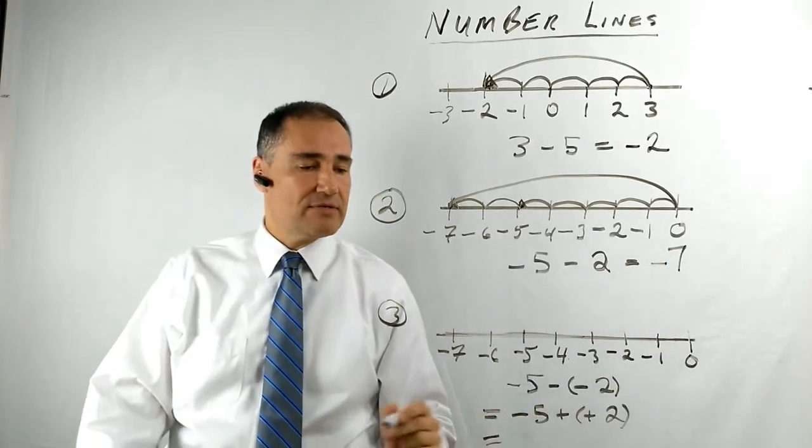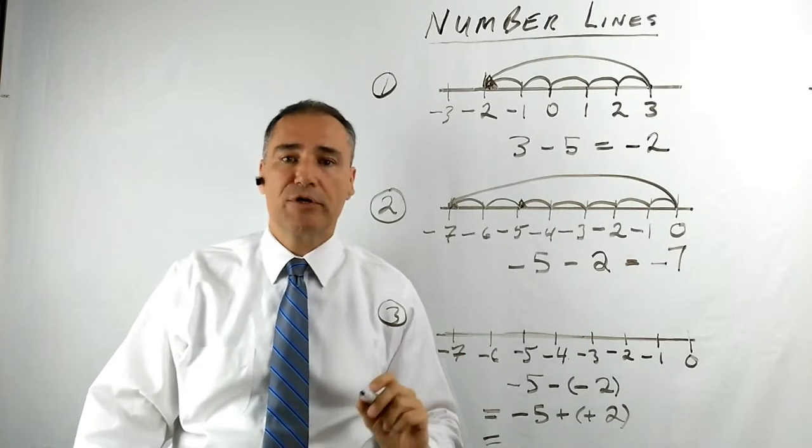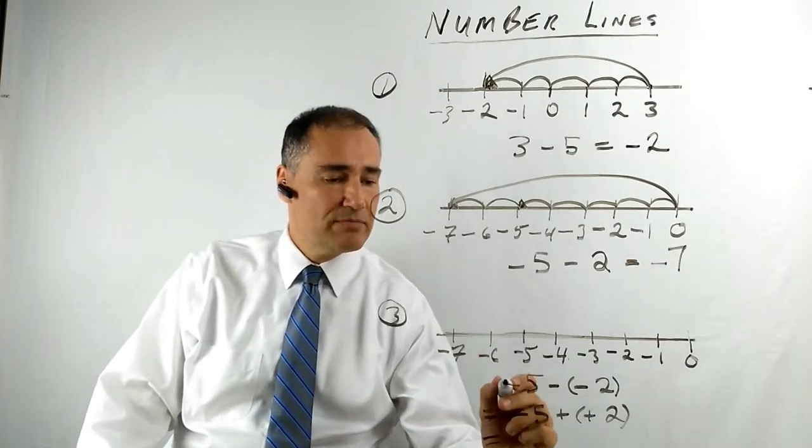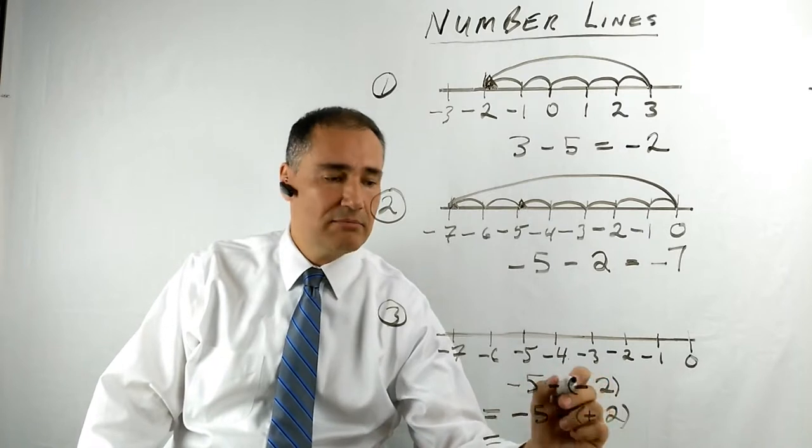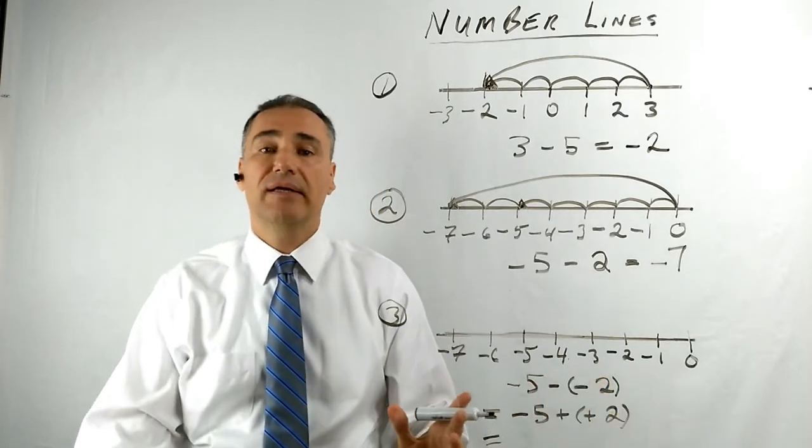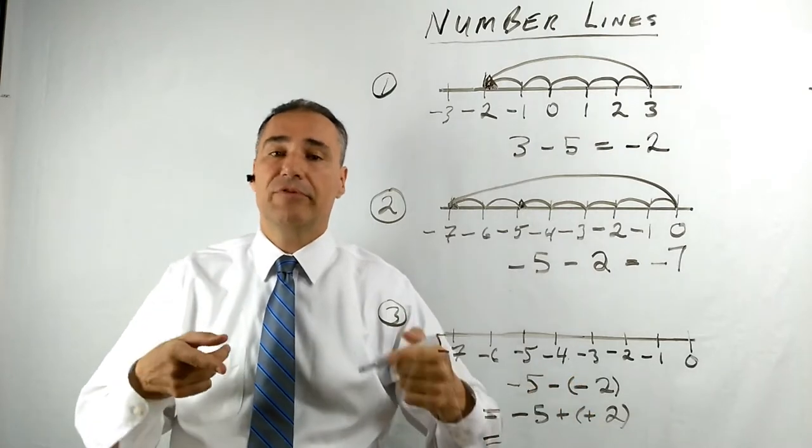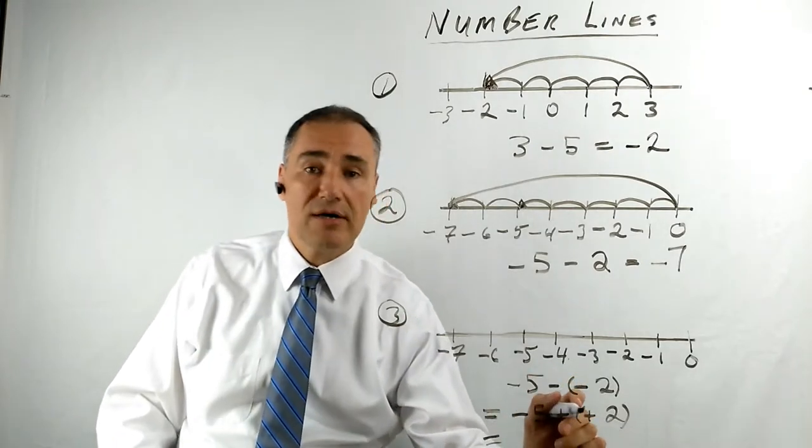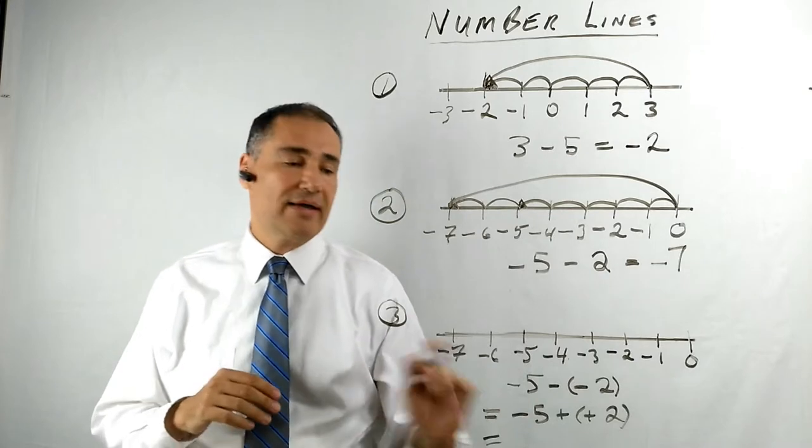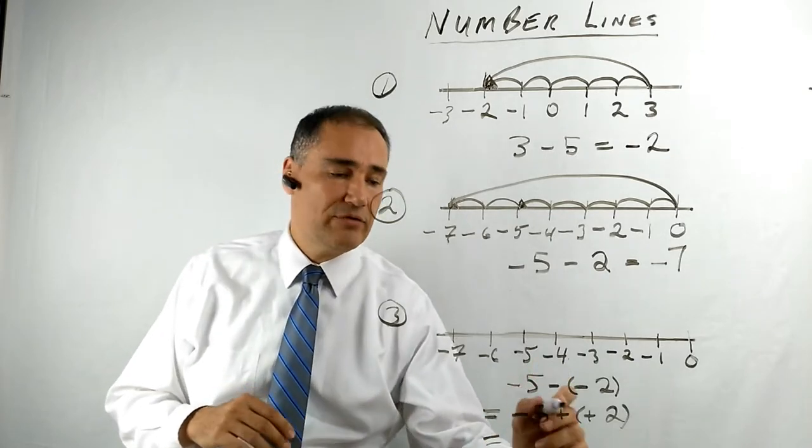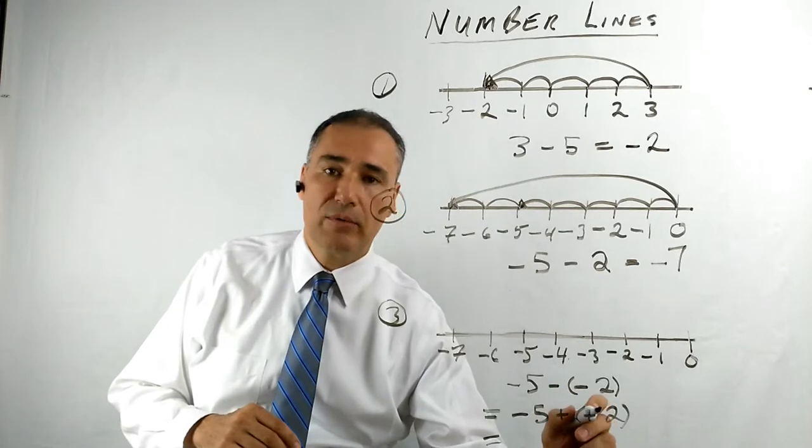I hope that makes sense. Now the third one, a little bit more tricky. Now we're going to do minus 5 minus, in brackets, minus 2. Now you've probably heard of this rule where you've got two minuses together. That means you flip the signs. So now they both become positive. Okay? So now, again, try not to get confused with this.